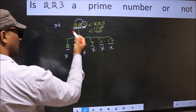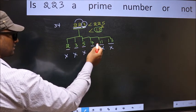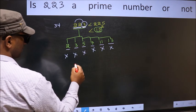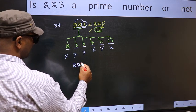So this number is not divisible by any of the numbers. Hence, 223 is a prime number.